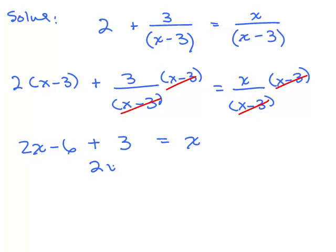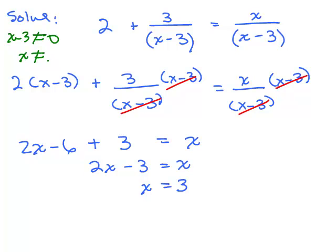Simplifying: 2x minus 3 equals x. Subtracting x from both sides and adding 3 gives x equals 3. But wait — I skipped an important first step. Looking at the denominator, (x minus 3) cannot equal 0, so x cannot equal 3. And I just solved the problem and got x equals 3 — that's a contradiction.